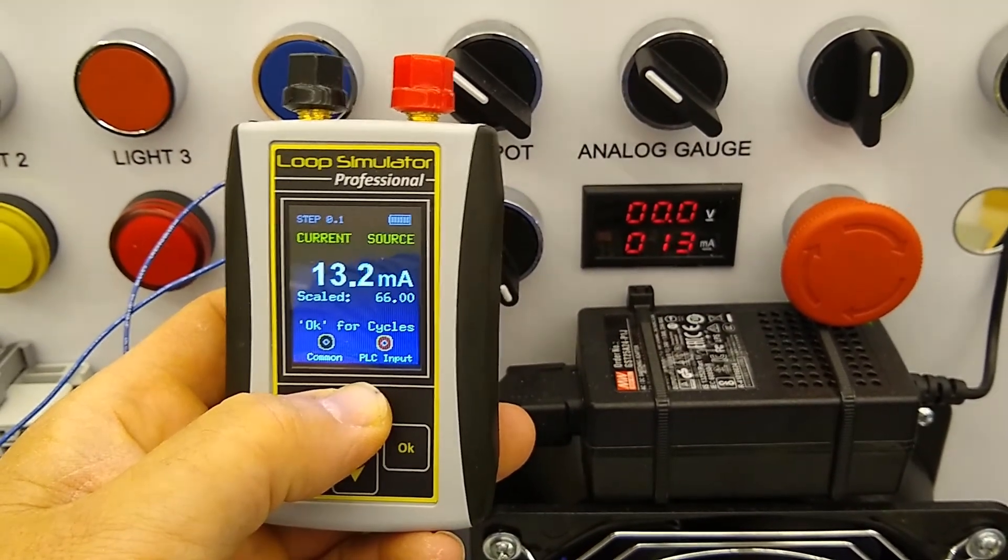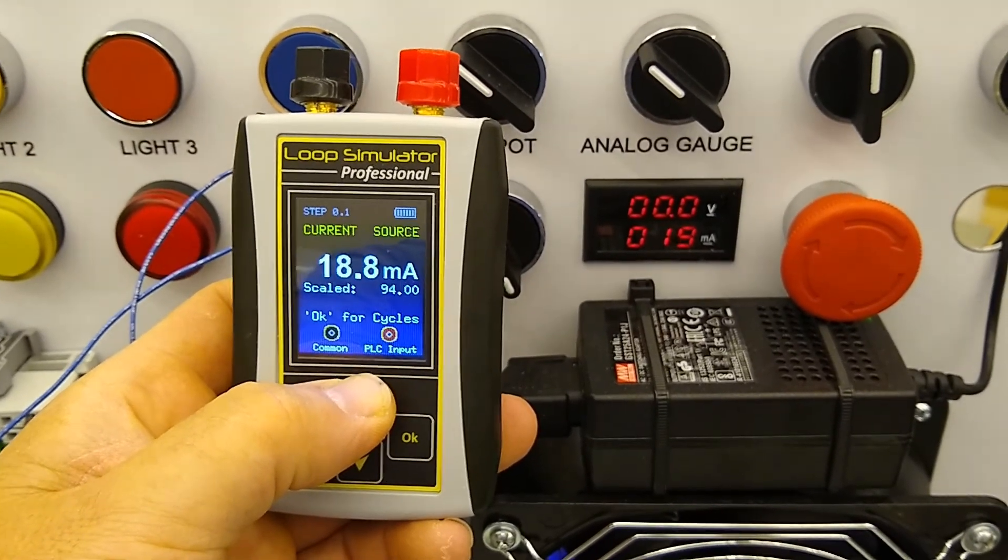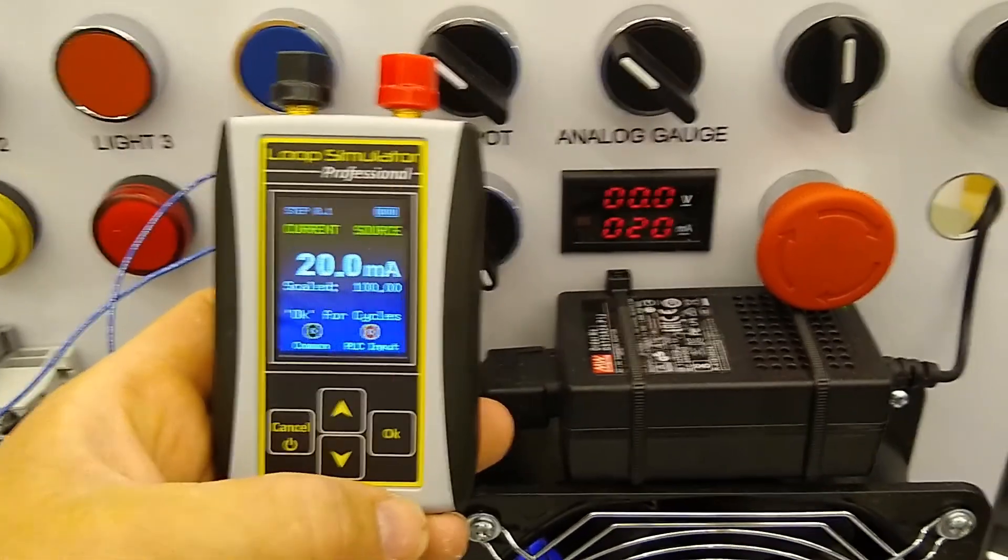And there goes the bottom meter. And the bottom meter is our milliamp signal. And we can bring it all the way up to 20 milliamp. And that is how a current source is wired.